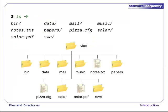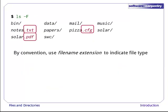Here's that output again, with a picture of what it's showing us. You may have noticed that the file's names are all something dot something. By convention, the second part, called the file name extension, indicates what type of data the file holds.